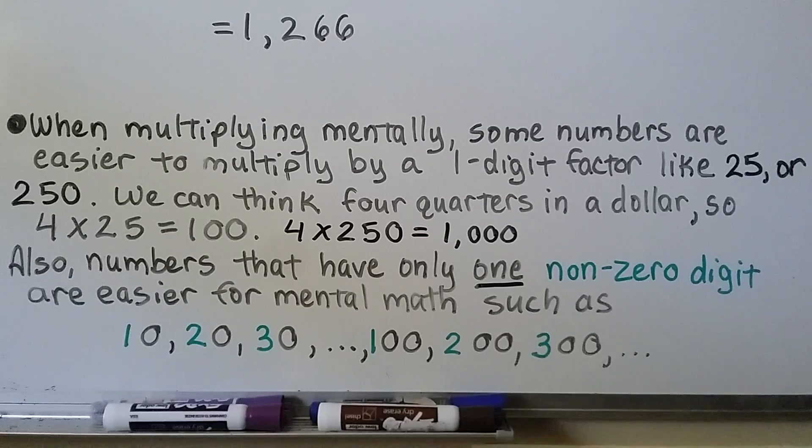When multiplying mentally, some numbers are easier to multiply by a one-digit factor, like 25 or 250. We can think four quarters in a dollar. So 4 times 25 is equal to 100. 4 times 250 is equal to 1,000.